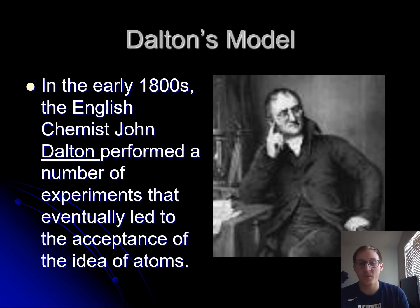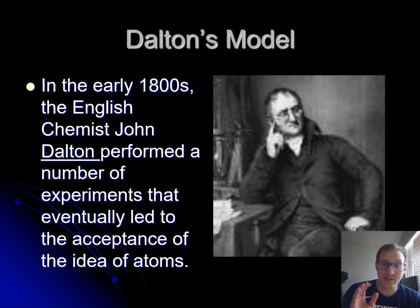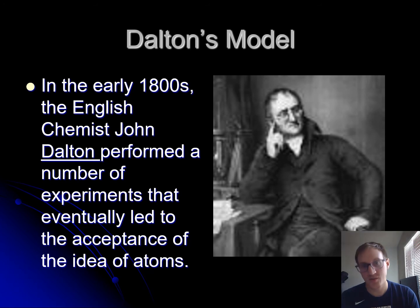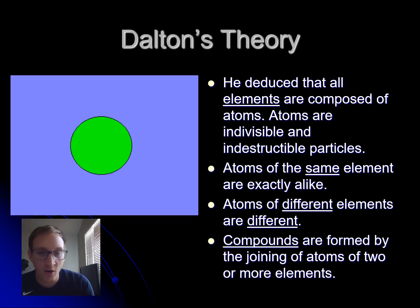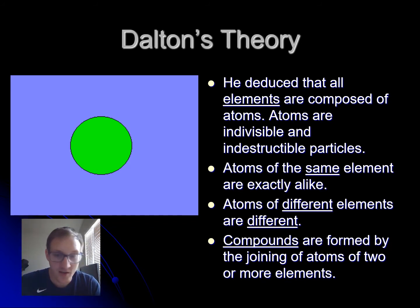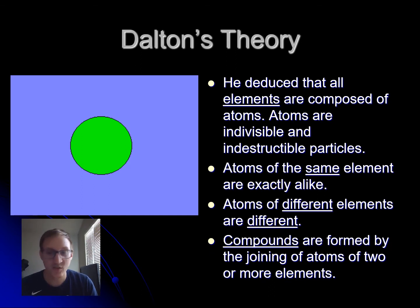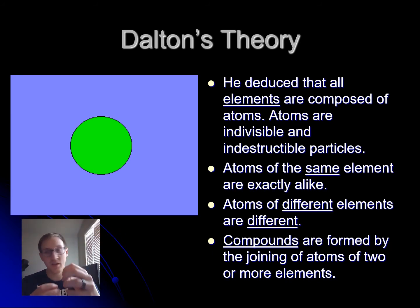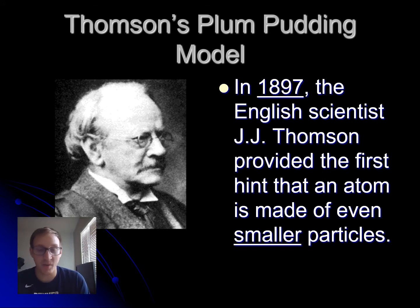Chemist John Dalton performed experiments that led to the acceptance of atoms. His model is similar to Democritus's, but instead of just theorizing, he ran actual experiments to prove it. He deduced that all elements are composed of atoms; atoms are indivisible and indestructible; atoms of the same element are exactly alike; atoms of different elements are different; and compounds are formed by joining multiple atoms of different elements. This is still the billiard ball model — atoms as simple little balls.